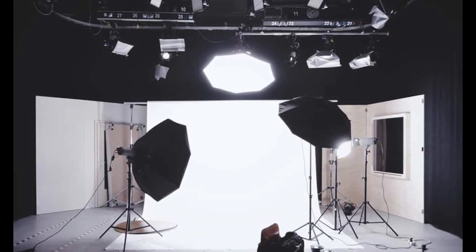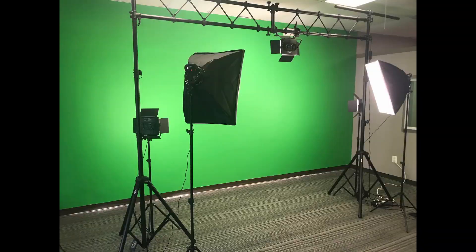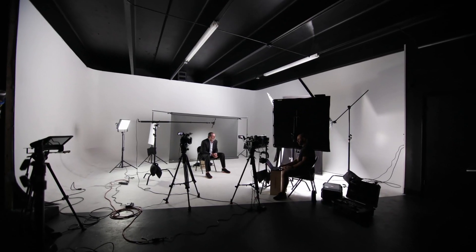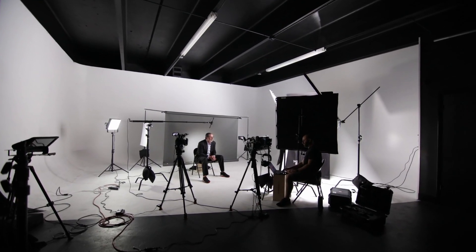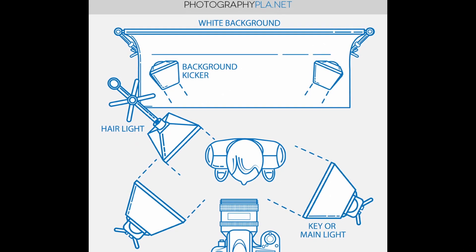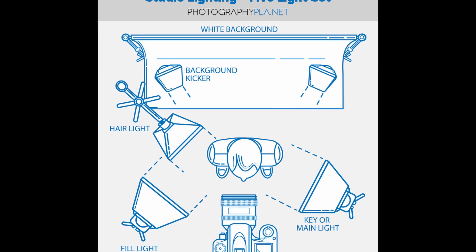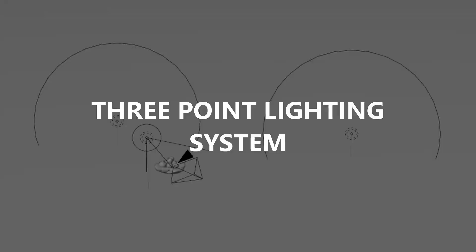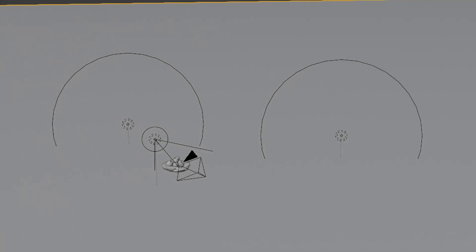Throughout your life, you've probably seen some complicated looking lighting setups like this, usually used in photography. They have all of these complexities that would take a long time to understand. But there is one setup that basically anyone can understand: the 3-point lighting system, which is surprisingly easy to make in Blender.